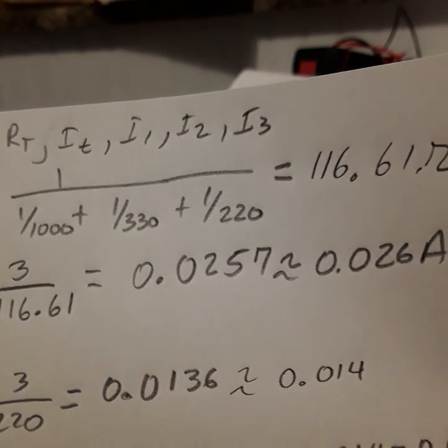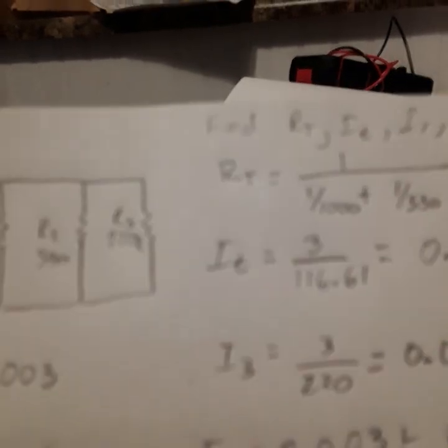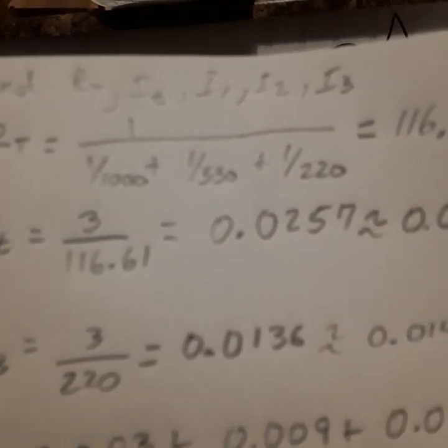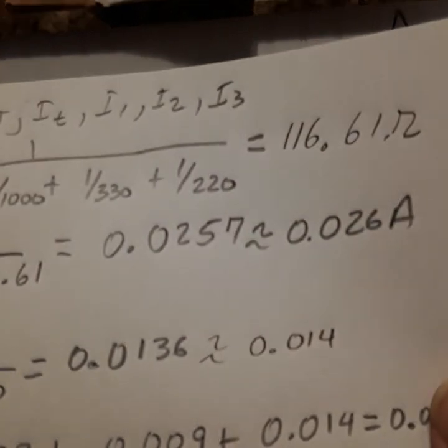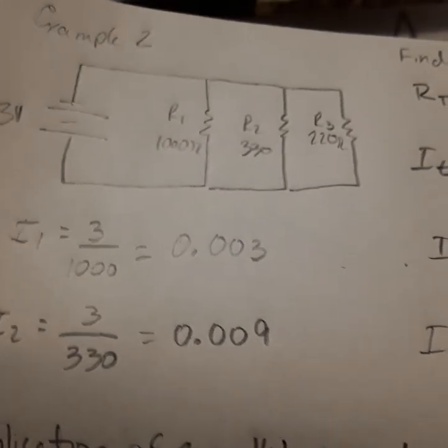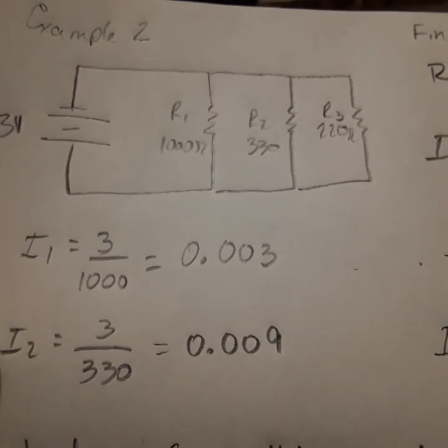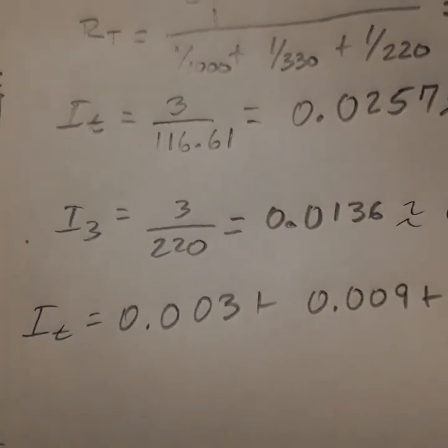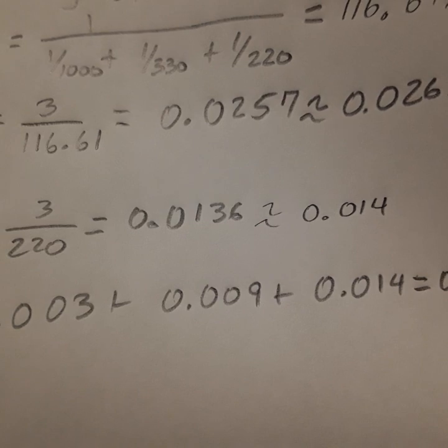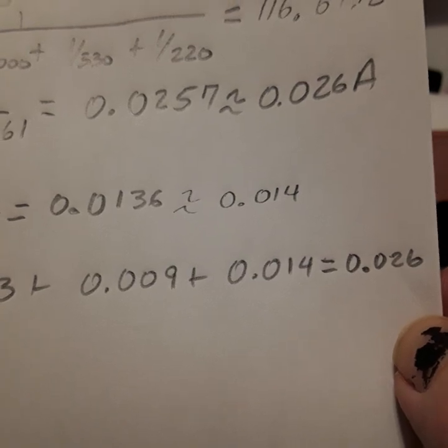We get the result of 116.61 ohms. We check and know this total resistance is less than the smallest resistor, so we're good. We calculate the total current: 3 volts divided by 116.61 equals 0.026 amps. Then we calculate the current through each branch. I1: 3 divided by 1000. I2: 3 divided by 330. I3: 3 divided by 220, approximately 0.014. We add them together and verify the total current is 0.026 amps.